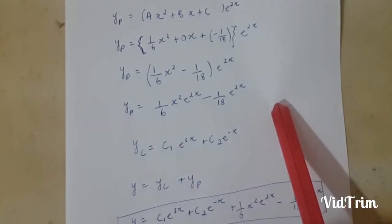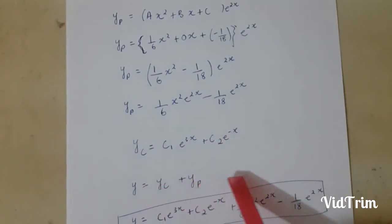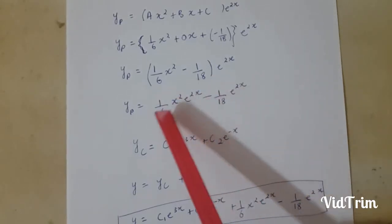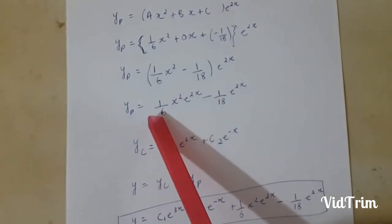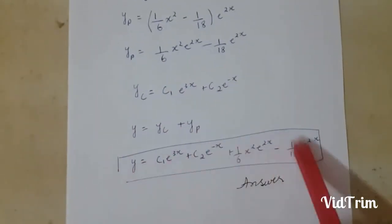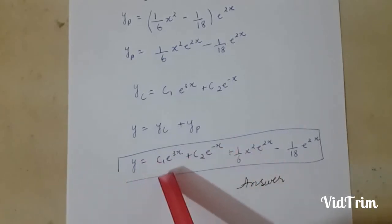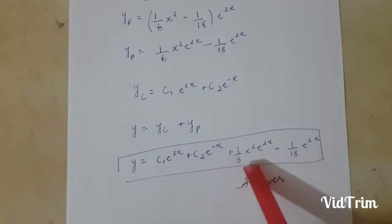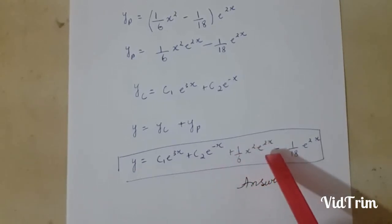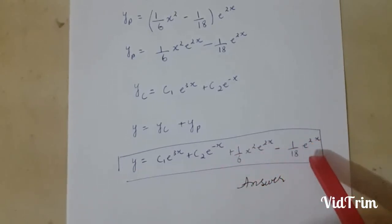We know that our final solution equals yc plus yp and we know the values of yc and yp. So by substituting I got the final solution: y equals c1 e^(3x) plus c2 e^(-x) plus (1/6) x squared e^x minus (1/18) e^x.